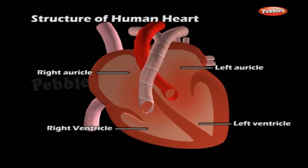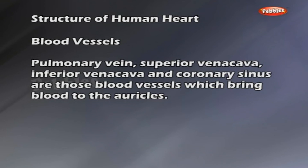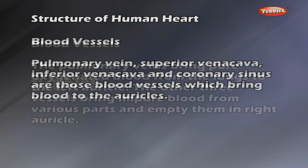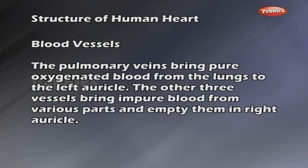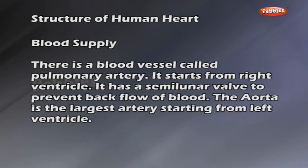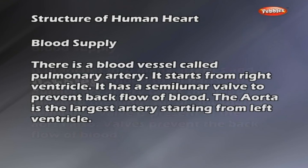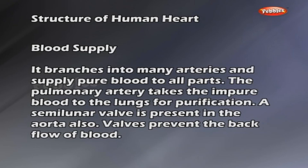The blood vessels bringing blood to the auricles include the pulmonary vein, superior vena cava, inferior vena cava and coronary sinus. The pulmonary veins bring pure oxygenated blood from the lungs to the left auricle. The other three vessels bring impure blood from various parts and empty into the right auricle. The pulmonary artery starts from the right ventricle and has a semi-lunar valve to prevent backflow. The aorta is the largest artery, starting from the left ventricle, branching into many arteries to supply pure blood to all parts. The pulmonary artery takes impure blood to the lungs for purification, and a semi-lunar valve is also present in the aorta.